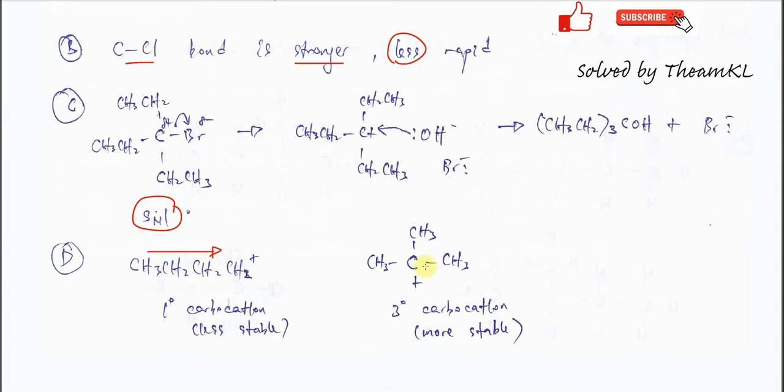Because this carbocation is bonded to three alkyl groups, and these three alkyl groups donate electrons to stabilize this carbocation more. So the positive inductive effect here is greater, making it more stable.